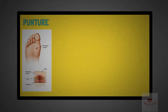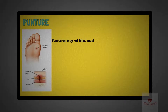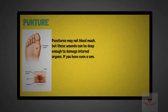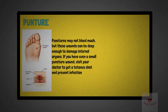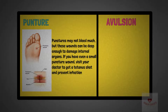Puncture: a puncture is a small hole caused by a long, pointy object such as a nail or needle. Sometimes a bullet can cause a puncture wound. Punctures may not bleed much, but these wounds can be deep enough to damage internal organs. If you have even a small puncture wound, visit your doctor to get a tetanus shot and prevent infection.